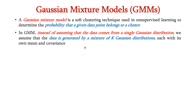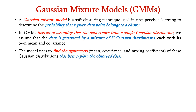we assume that it is generated by a mixture of k Gaussian distributions, each with its own mean and covariance. This model tries to find the parameters — namely mean, covariance, and mixing coefficients — of these Gaussian distributions that best explain the observed data.